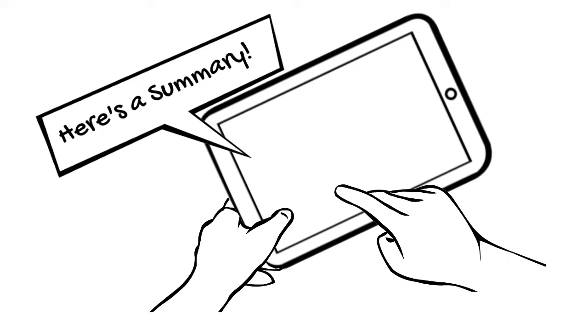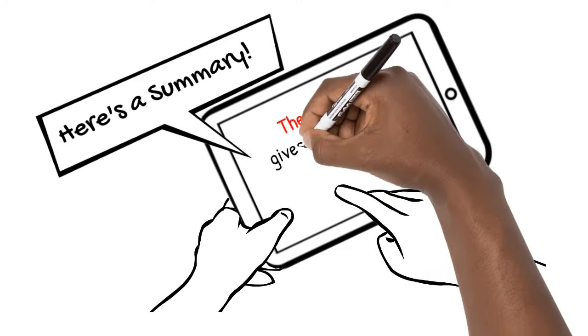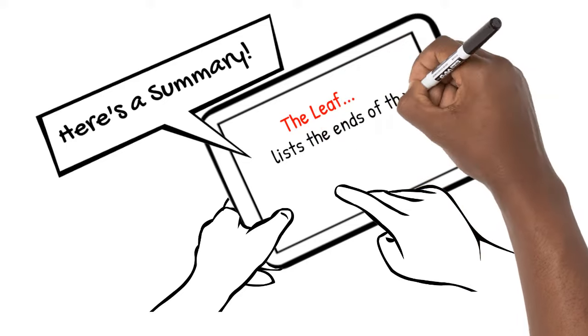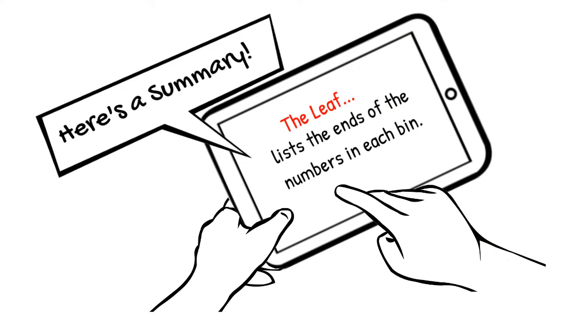Here's what we learned in this video. A stem and leaf displays quantitative data. The stem gives the start of the numbers in each bin. The leaf lists the ends of the numbers in each bin.